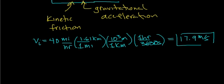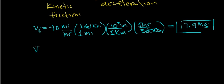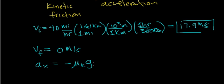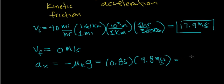This is both a force problem and a kinematics problem. The car's final velocity is 0 m/s since it comes to a stop. The acceleration is negative mu_k times g. With a coefficient of kinetic friction of 0.85 and g = 9.8 m/s², the acceleration works out to negative 8.33 m/s². This negative sign confirms the object is slowing down — decelerating at 8.33 meters per second every second.